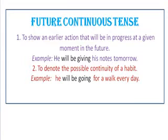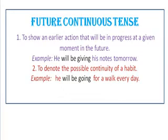Then next is future continuous tense: to show an action in progress at a given moment in the future. Continuous hai toh '-ing' aayega, future hai toh 'will' aayega. Like: 'He will be giving his notes tomorrow' — matlab wo aage future mein apne notes dega. Clue pakadiye: '-ing' hai matlab continuous hai; phir dekhiye 'was' hai, 'will' hai, ya 'is' hai — toh aapko kaunsa tense hai, pata chal jaayega: past, future, ya present.